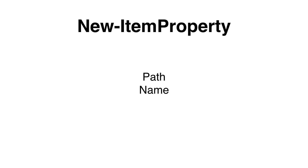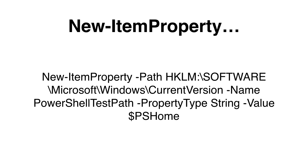To write data to the registry, we can use the New-ItemProperty cmdlet. We need to specify the path where we would like to add the value or the key, a name for the key, the data type in the property type parameter, and the value that we would like to add. Here is an example: we call the cmdlet, specify the path, set the name to 'PowerShellTestPath', set the value type to string — note you can just write 'string' instead of 'REG_SZ' — and lastly specify the value.